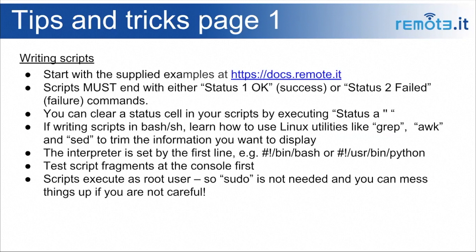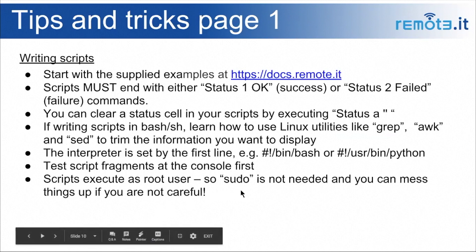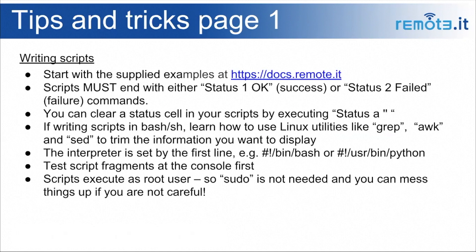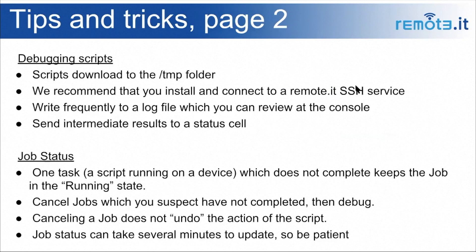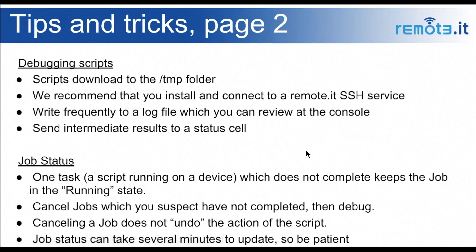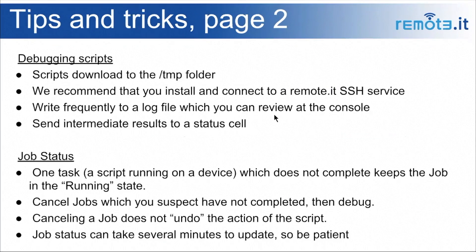If you want to use an interpreter other than Bash, such as Python or PHP, just change the first line of the script to point at whatever interpreter you have. It's helpful to test script fragments at the console first before incorporating them into a bulk script — that will save a lot of time. It's important to know that scripts execute as the root user, so you don't need to use sudo, but if you're not careful you can do some bad things to your operating system. When debugging scripts, note that they download to the temp folder. We recommend installing and connecting to a remote SSH service to inspect them. You should also write frequently to a log file and can send intermediate results to a status cell.